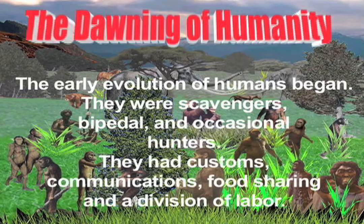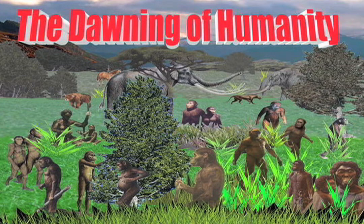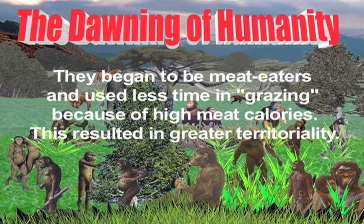The dawning of humanity. The early evolution of humans began. There were scavengers, bipedal, and occasional hunters. They had customs, communications, food sharing, and a division of labor. They began to eat meat and used less time in grazing, because of high meat calories. This resulted in greater territoriality.